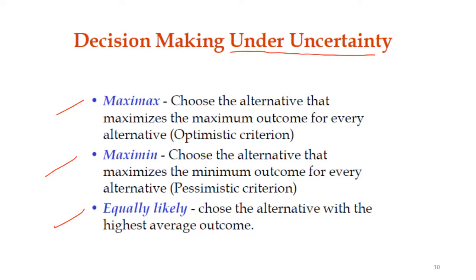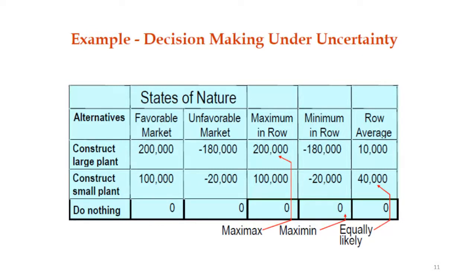For decision making under uncertainty, there are three approaches: maximax, maximin, and equal likely. Maximax means choosing the alternative that maximizes the maximum return — first find the maximum outcome per row, then select the maximum of those. Maximin means choosing the alternative that maximizes the minimum outcome — first find the minimum per row, then select the maximum of those minimums. Equal likely means computing the average and selecting the highest average.